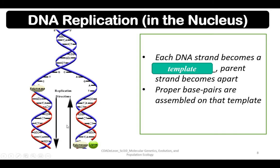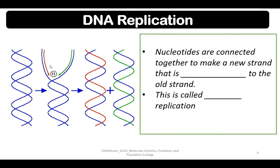In DNA replication, one parent DNA splits. Replication occurs as the strands split by means of DNA polymerase, which is an enzyme, and ligase, which prepares the bases on the template. Nucleotides are then connected together to make a new strand that is complementary to the old strand.